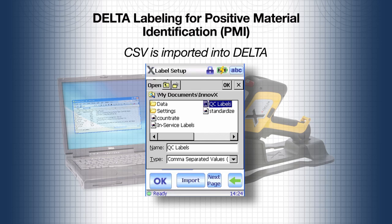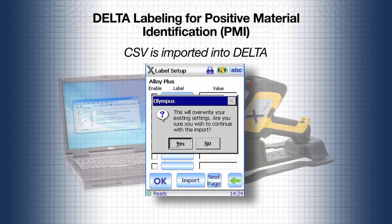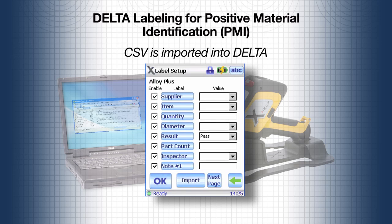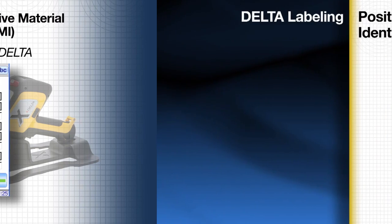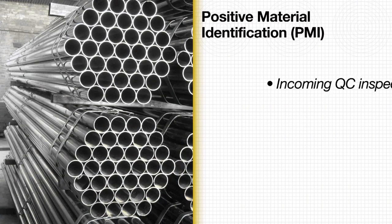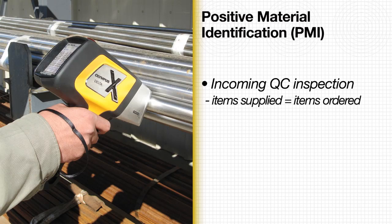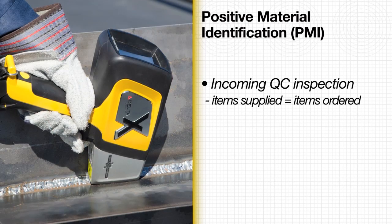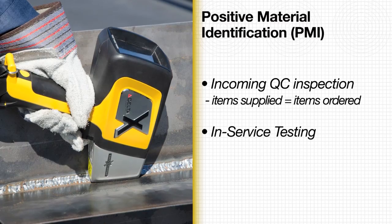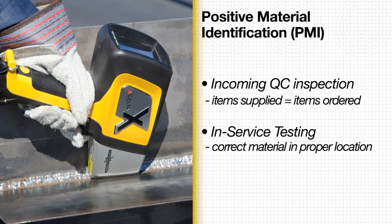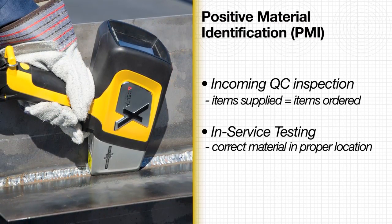You can have multiple label files on the Delta and choose the one you need for the tests you are about to run. The Delta labeling feature is extremely helpful in PMI situations such as incoming QC inspection, where the items supplied need to be tested to make sure they are the items ordered, and in-service testing to ensure that the correct material is being used in the proper location.